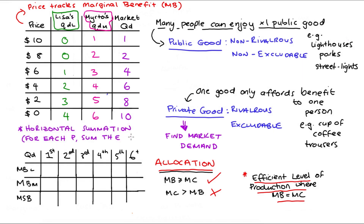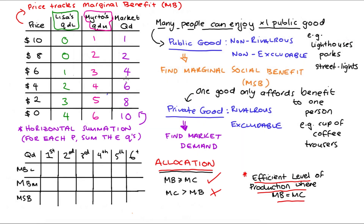This is what we call horizontal summation — we add up the quantities demanded at each price. It's called horizontal summation because quantity is the variable on our horizontal axis when we draw demand curves. If we have a public good, though, one single unit is associated with benefit for many different people, and we need to account for this to get our allocation right. What we do is add up the marginal benefit for each unit to get the total marginal benefit, which we call our marginal social benefit.